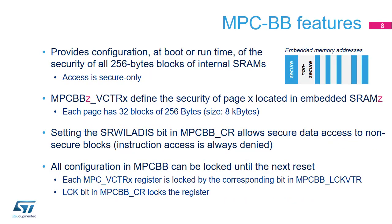The MPC block-based controller configures the secure attribute of internal SRAM 256-byte blocks, each having a corresponding control bit. The MPC-BB is only accessible in secure state. The MPC-BB control register's secure read-write illegal access disabled bit determines whether secure data accesses are permitted to non-secure SRAM blocks. The MPC-BB vector registers are bitmaps, each bit corresponding to an internal SRAM chunk of 256 bytes. Each bit in the MPC-BB log vector registers logs the secure mode of the corresponding 8-kilobyte superblock until the next reset. A superblock contains 32 blocks of 256 bytes.